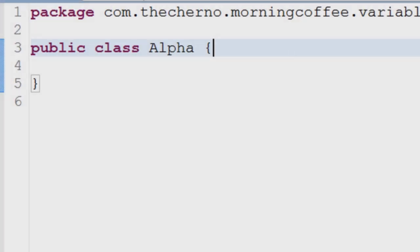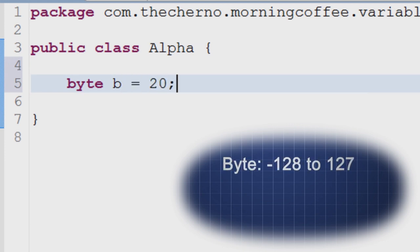First up is byte. The byte variable can contain any value from negative 128 to positive 127, 255 numbers in all. It's the smallest variable in Java and thus uses the least memory. It only stores integers.